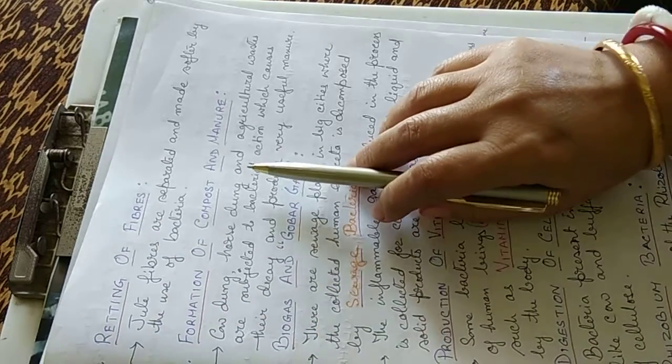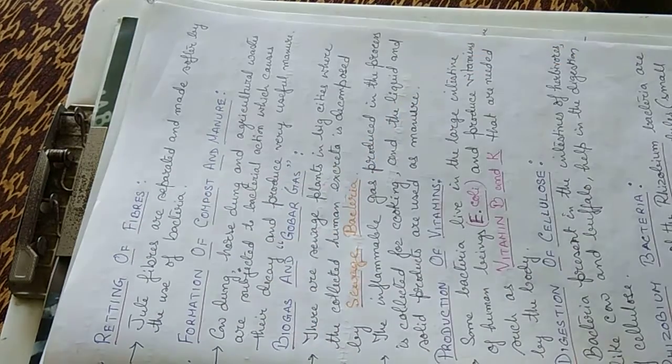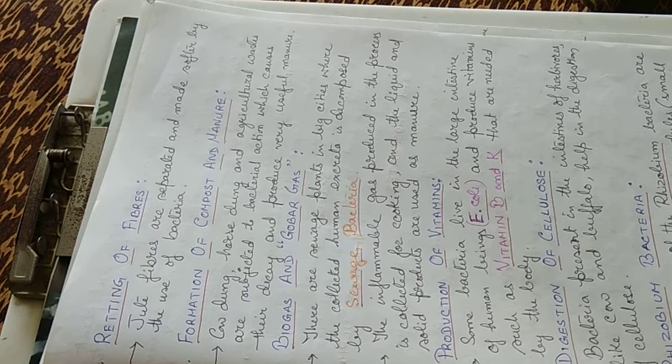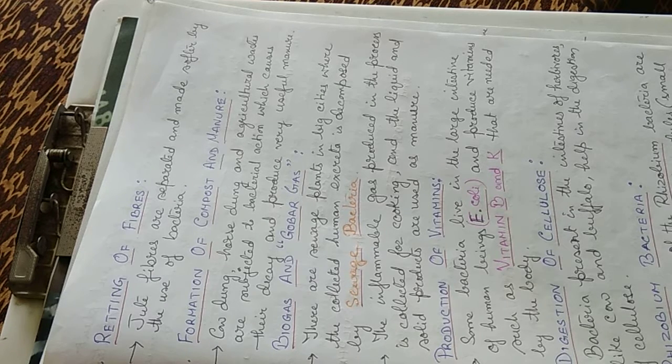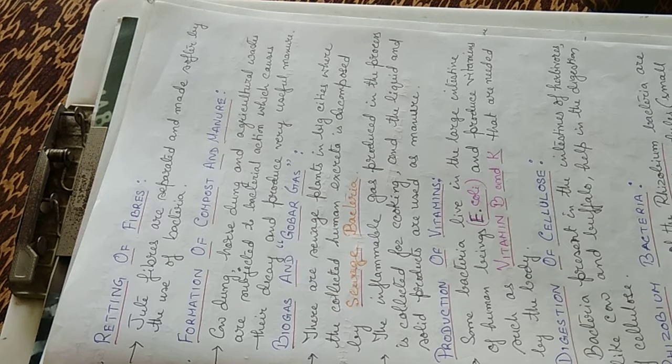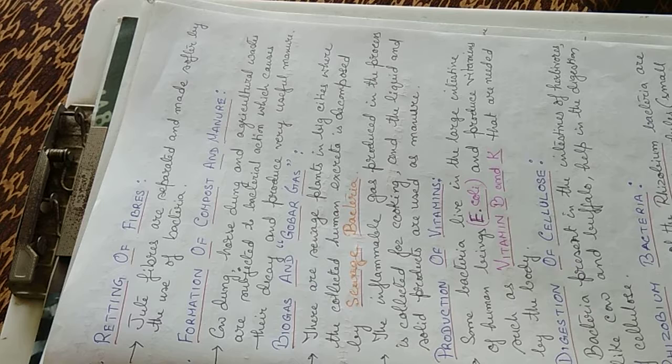Formation of compost and manure: cow dung, horse dung and agricultural waste are subjected to bacterial action which causes their decay and produces very useful manure. They are used in production of biogas and gobar gas. There are sewage plants in the big cities where collected human excreta is decomposed by sewage bacteria. The inflammable gas produced in the process is collected for cooking and the liquid and solid products are used as manure.